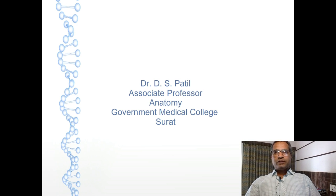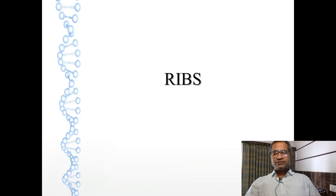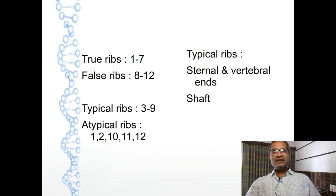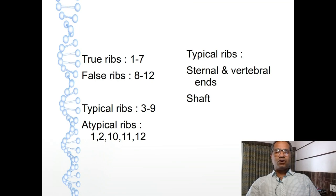Namaskar. Today we will cover ribs, its general features, and some attachments of ribs with its applied importance. Rib is a flat or plate-like elongated bone, slightly twisted at some points. There are a total of 12 pairs of ribs present in the thoracic cage. In these 12 pairs, some ribs are similar in features while some ribs have special or different features, and we can classify them into two types.